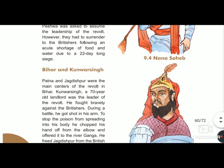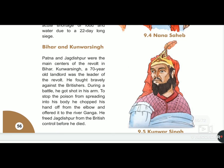In Bihar, the leader was Kumar Singh. Patna and Jagdishpur were the main centres of the revolt in Bihar. Kumar Singh, a 70-year-old landlord, was the leader and fought bravely against the Britishers. He was shot in his arm, and to stop the poison from spreading into his body, he chopped his hand off from the elbow and offered it to the river Ganga. He freed Jagdishpur from British control before he died.